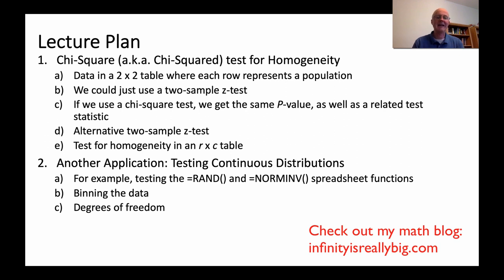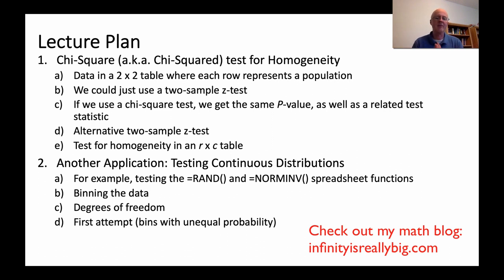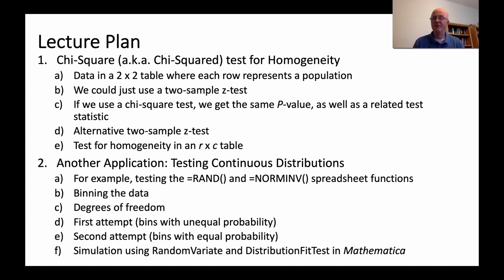We will just do the simplest case — a first attempt where the bins are fairly natural to pick but have unequal probability, and then a second attempt where the bins have roughly equal probability. Finally, we'll talk about simulating on Mathematica with RandomVariate and DistributionFitTest. That won't take long; I just want to emphasize that you can do it on Mathematica, and it will reemphasize the meaning of the p-value of the test.